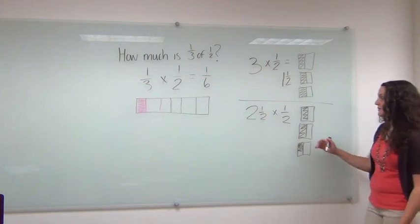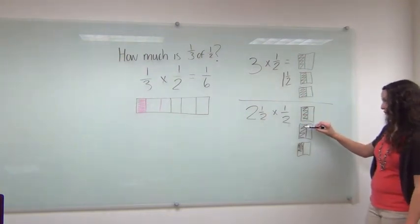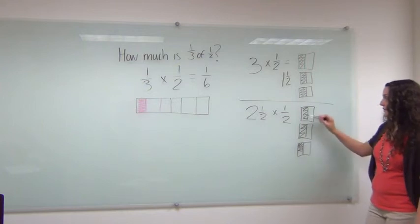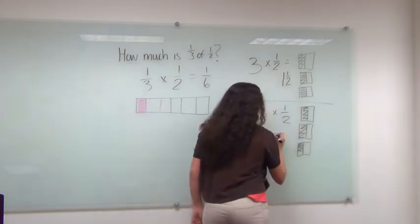So when I get my answer here, when I'm multiplying, think of it as two halves plus a quarter. So that's one-and-one-fourth.